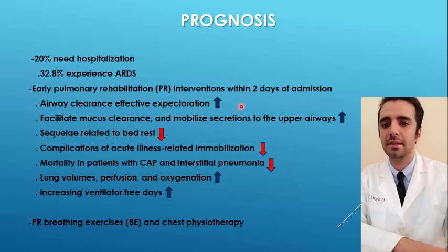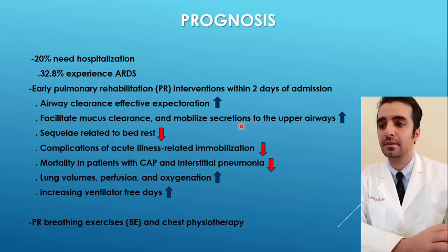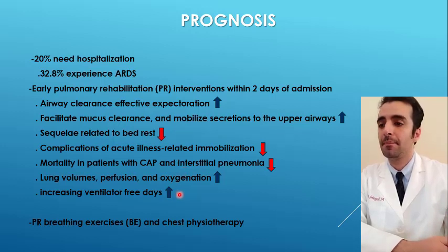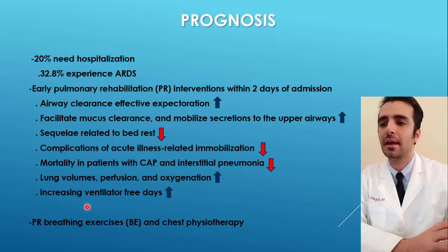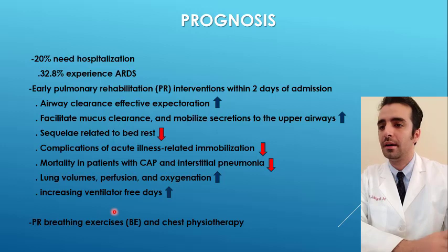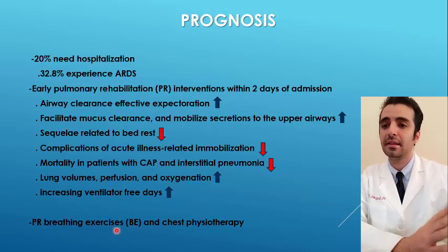The primary objectives of PR at this stage are to promote airway clearance and prevent complications of acute illness-related immobilization. Proper incorporation of PR into medical treatment could promote effective expectoration, facilitate mucus clearance, and mobilize secretions to the upper airways, thereby improving lung volume, perfusion, and oxygenation. PR may also help prevent complications of bed rest, improving physical function and reducing hospital stay by increasing ventilator-free days. Although there is still no evidence about the efficacy of PR in the specific setting of COVID-19, several established physiotherapy techniques are safely recommended, including breathing exercises and chest physiotherapy.